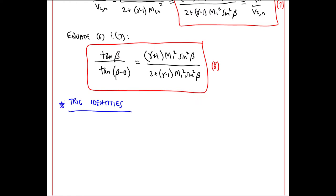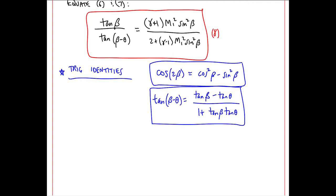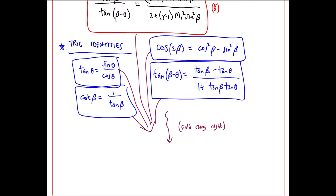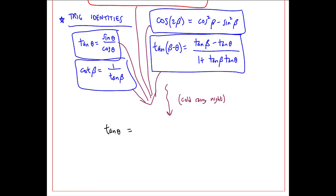This will involve some trig identities. Cosine of 2 beta is cosine squared beta minus sine squared beta. Tangent beta minus theta is tangent beta minus tangent theta over 1 plus tangent beta tangent theta. Of course we have tangent theta is sine theta over cosine theta, and cotangent beta is 1 over tangent beta. We combine all of these and do lots of algebra. And what we can do is isolate theta on the left side of the equation. We get tangent theta is 2 cotangent beta times M1 squared sine squared beta minus 1 over M1 squared times the quantity gamma plus cosine 2 beta plus 2.